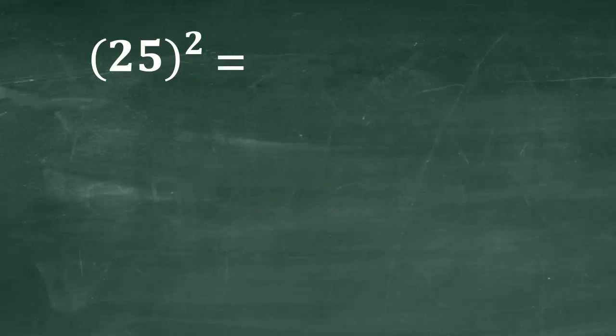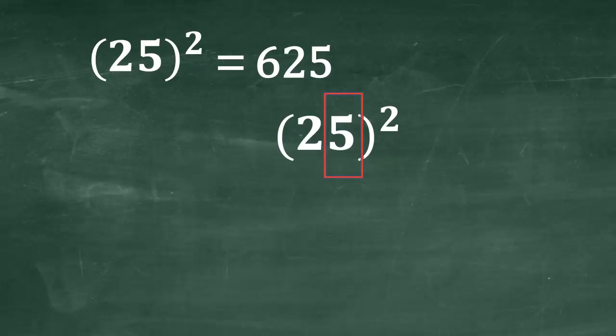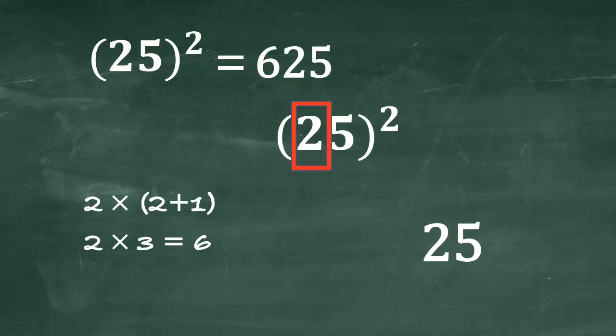Friends, here, square of 25 is 625, answer in seconds. See how? First step, unit place digit is 5, square 5 and write 25. Remaining is 2, next step is 2 into 1 more than 2, that is 2 into 3, write 6. So square of 25 is 625, it's easy right? Let us see few more examples.